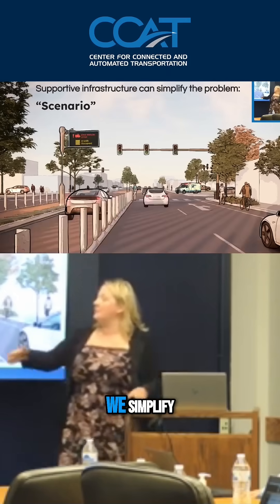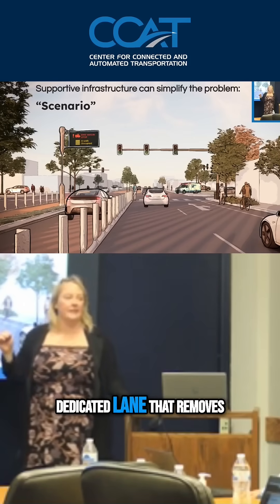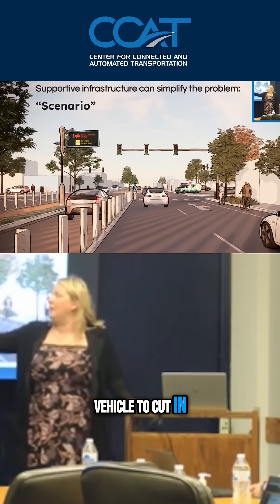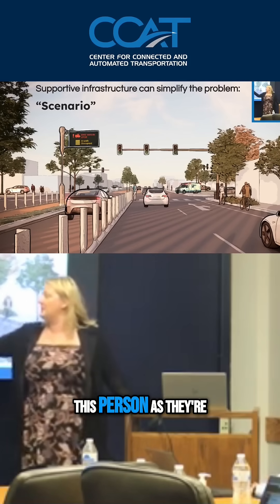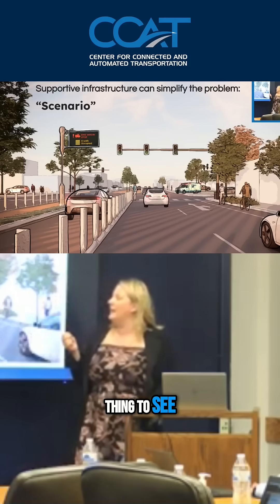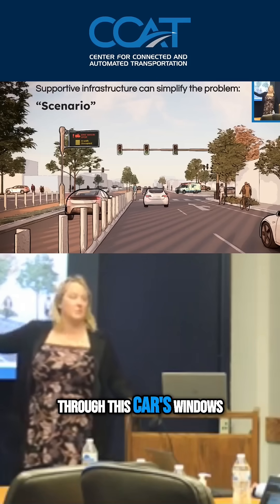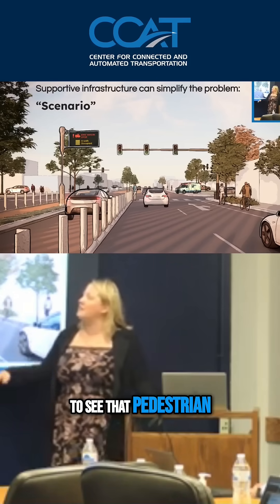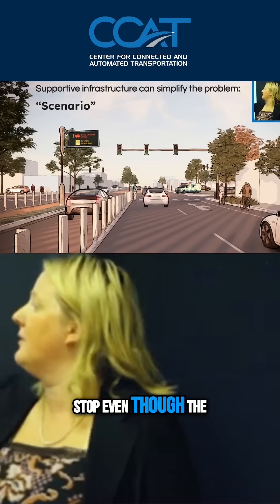So again, we simplify. We put that barrier up, give you your own dedicated lane that removes the ability for the vehicle to cut in. We also tell you the crosswalk is occupied — so whether you've seen this person as they're crossing around this car, which is a hard thing to see. Humans, honestly, the way they do it is they look through the car's windows to be able to see that pedestrian. And we tell you there's an emergency vehicle that's coming, so you need to stop even though the light is green.